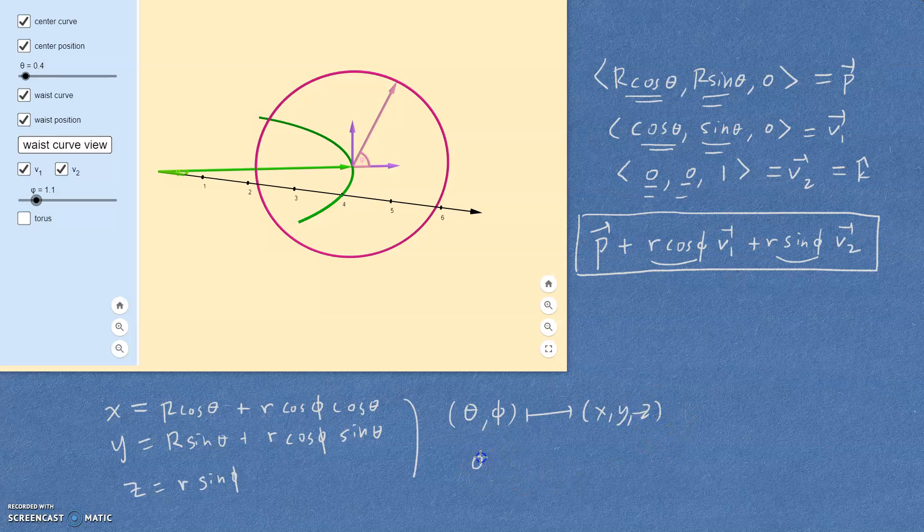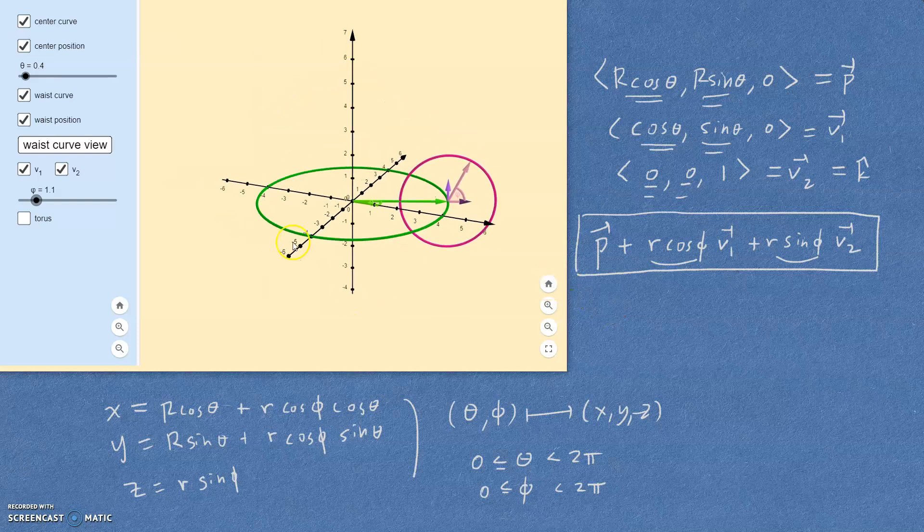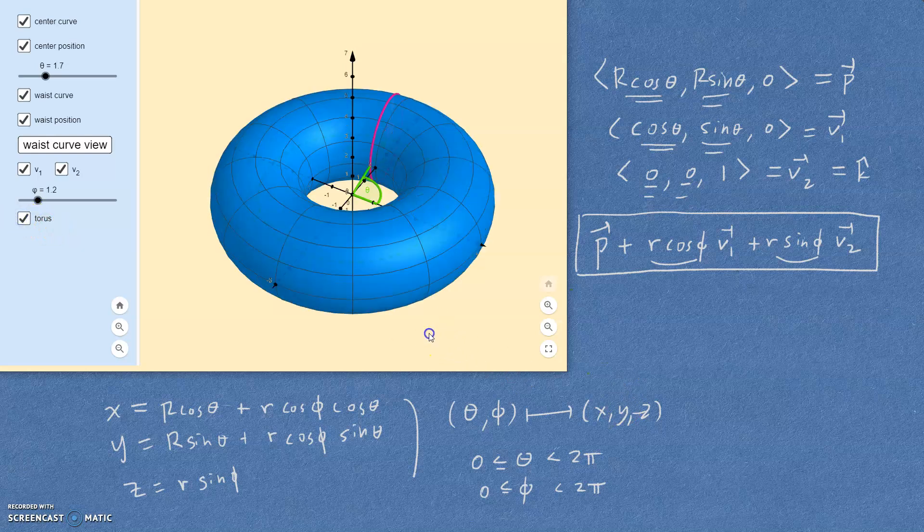You would probably want to limit your theta values to be only one rotation around the circle, the green circle there. And that would be something like this for theta. And for phi, you'd probably want to do something similar from zero to two pi. You don't need to include two pi on there. And so the result is that with two different angles, theta and phi, we can describe different points on this torus. And there you go.